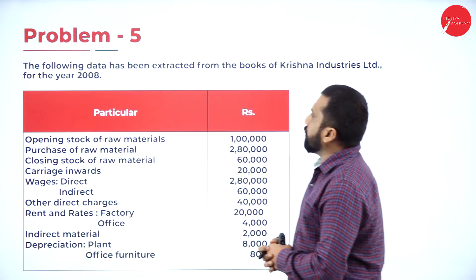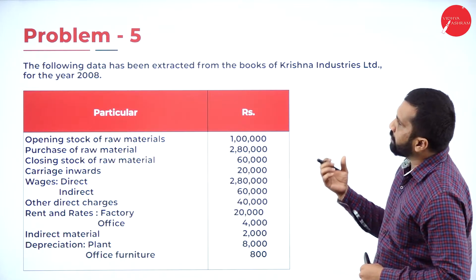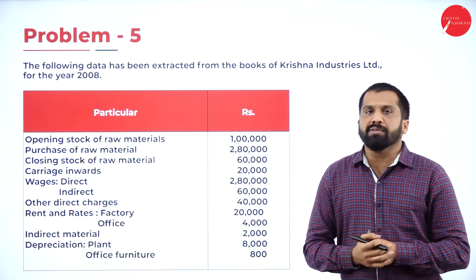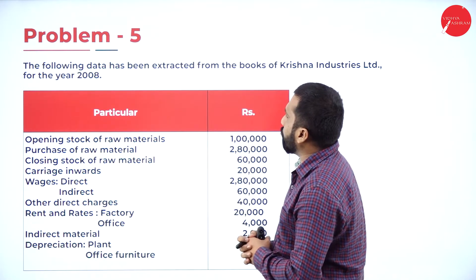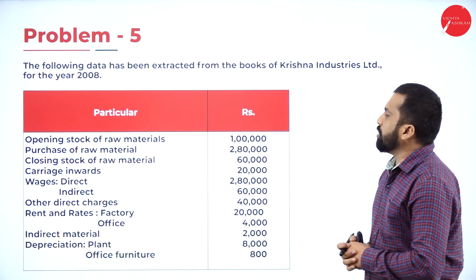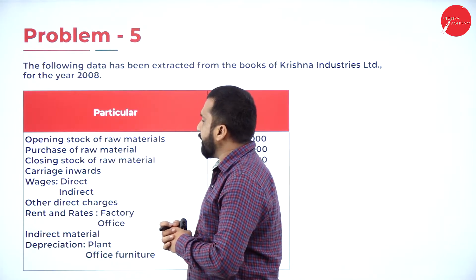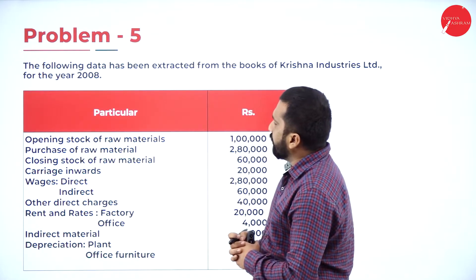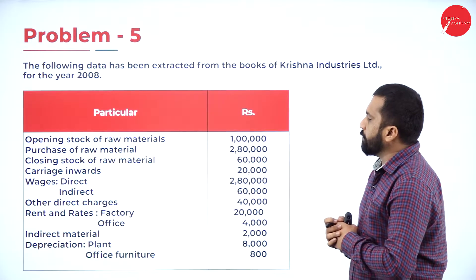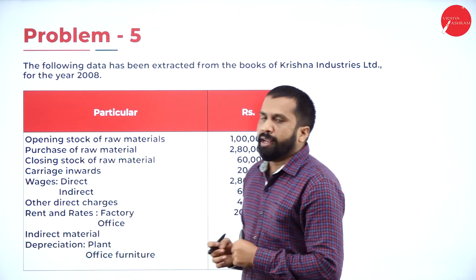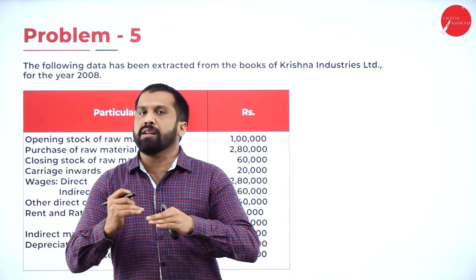The following data has been extracted from the books of Krishna Industry Limited for the year ended 2008. Particulars include: opening stock of raw material, purchase of raw material, closing stock, carriage inward, direct wages, indirect wages, other direct charges, rent and rates, indirect material, and depreciation of plant and furniture.